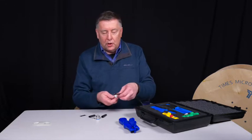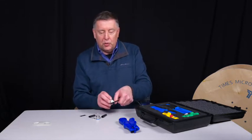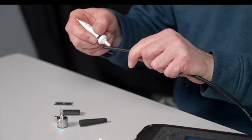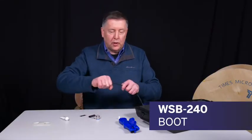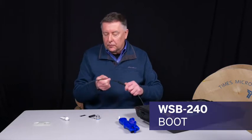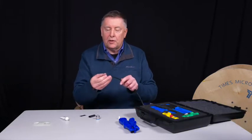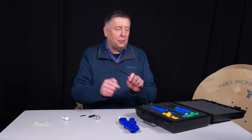First thing we're going to do here is put one of our WSB-240 boots on there. Put a little bit of rubber lubricant, rubber slide. Get that boot started. That WSB-240 boot slides down on the cable. We'll take our crimp ferrule and slide it over the cable.